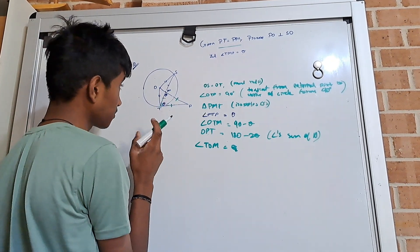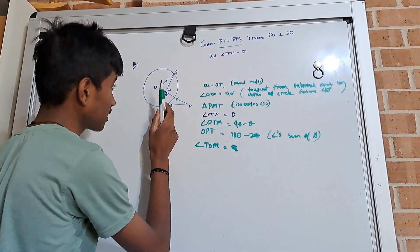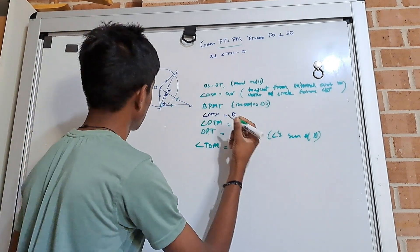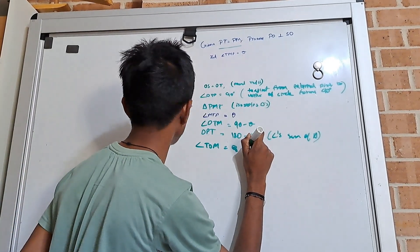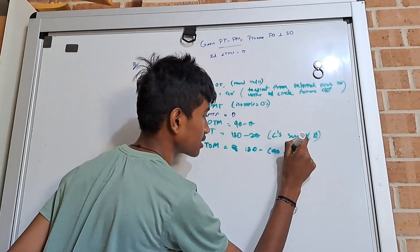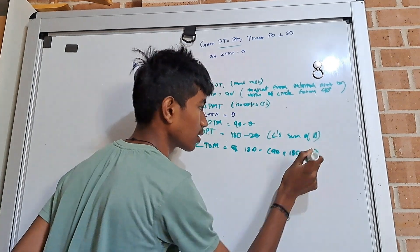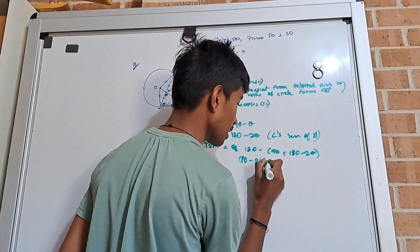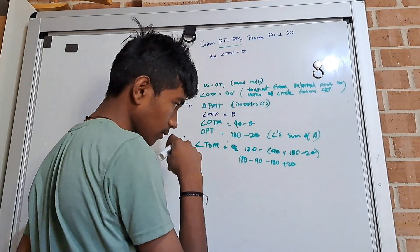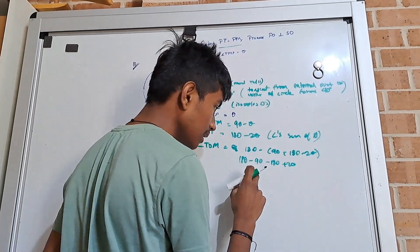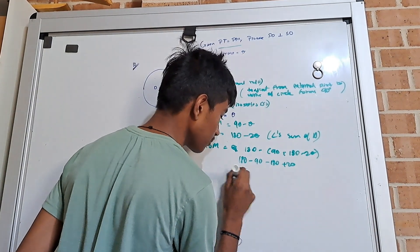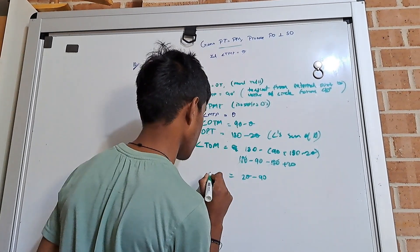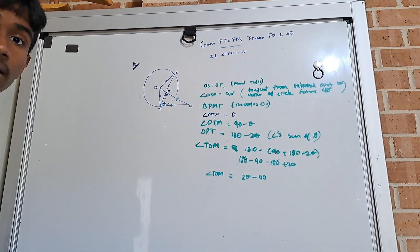Actually, let's look at triangle OPT instead. In this triangle, when you add the angles they should equal 180. So TOM is equal to 180 minus 90 plus 180 minus 2 theta. Expanding this: 180 minus 90 minus 180 plus 2 theta. So 180 minus 90 is 90, and 180 minus 180 cancels out, leaving 2 theta minus 90. So angle TOM is equal to 2 theta minus 90.